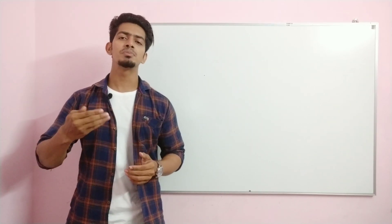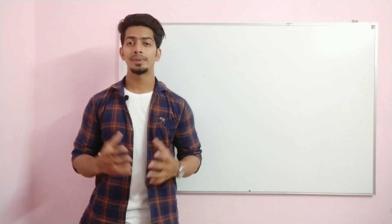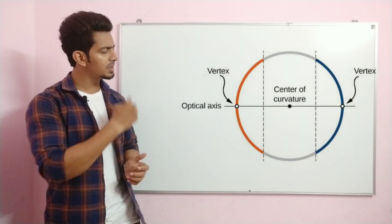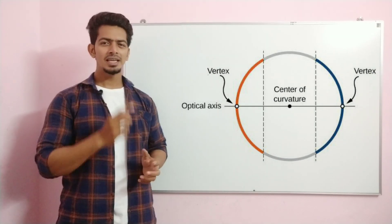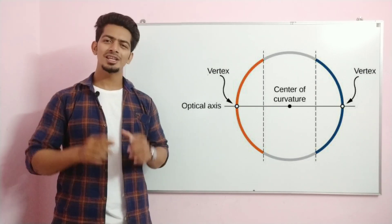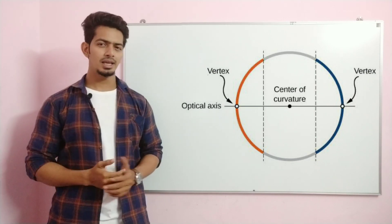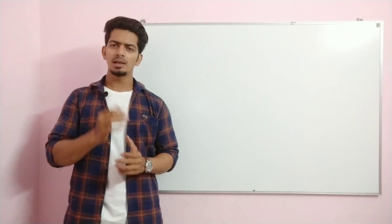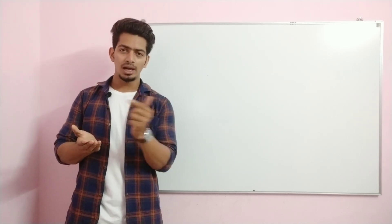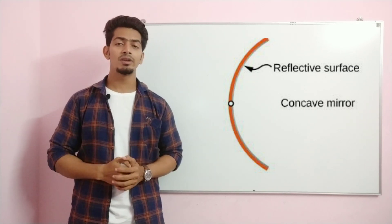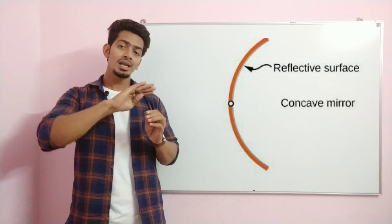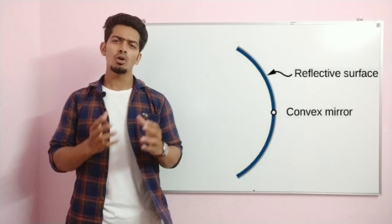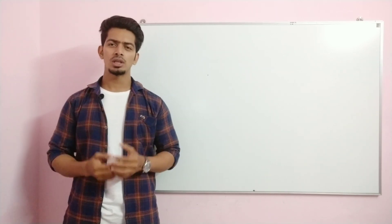Beyond plane mirrors, we have advanced mirrors — that is, spherical mirrors. A spherical mirror is considered as a part of a sphere. In this image you can see a sphere with a blue and red side, which are actually cut parts of a sphere. If we see them separately, one is a concave mirror and one is a convex mirror. If the inner part is the reflecting surface, it is called a concave mirror. If the outer part is the reflecting surface, it becomes a convex mirror.